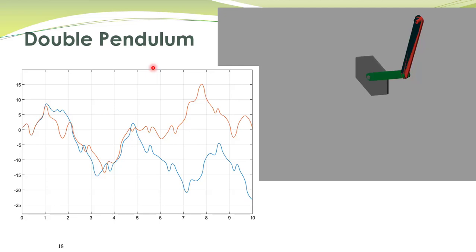An interesting example of chaotic systems is our double pendulum system. I have simulated two double pendulum systems in MATLAB Simulink. Here you see a double pendulum has two links, this first link and second link. I have simulated two double pendulums.